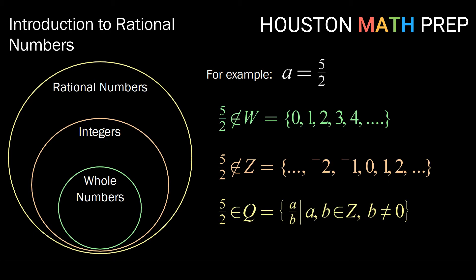But five and two are separately both integers, therefore five over two can be written as the quotient of two integers, so it is a rational number. So we can place five over two inside the rational number circle, but outside the integer and whole number circles.